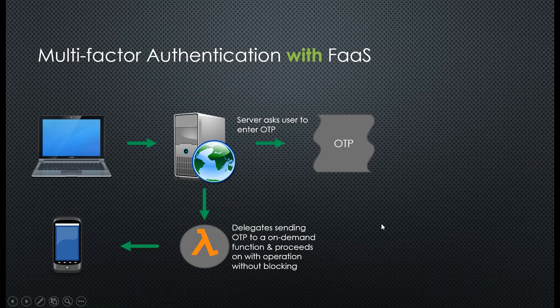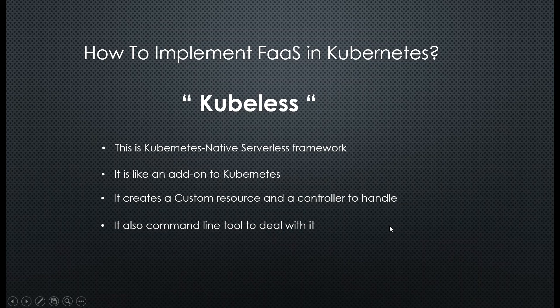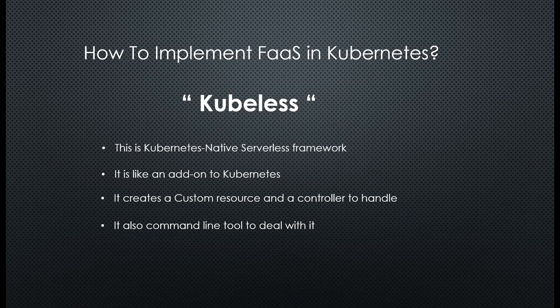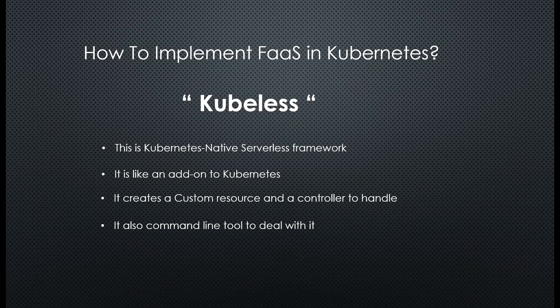It avoids latency since the service doesn't run 24/7. How can we implement Function as a Service in Kubernetes? Cloud providers offer Lambda functions and serverless functions, but we can also implement this in a cloud-native environment on Kubernetes. There is a Kubernetes-native serverless framework — an add-on to Kubernetes — that creates custom resources and controllers to handle serverless functions in a cloud-native environment, and also provides a CLI tool. If you want to know how to implement Function as a Service in a cloud-native environment, just put your comments in the comment section and I will make another video on this.